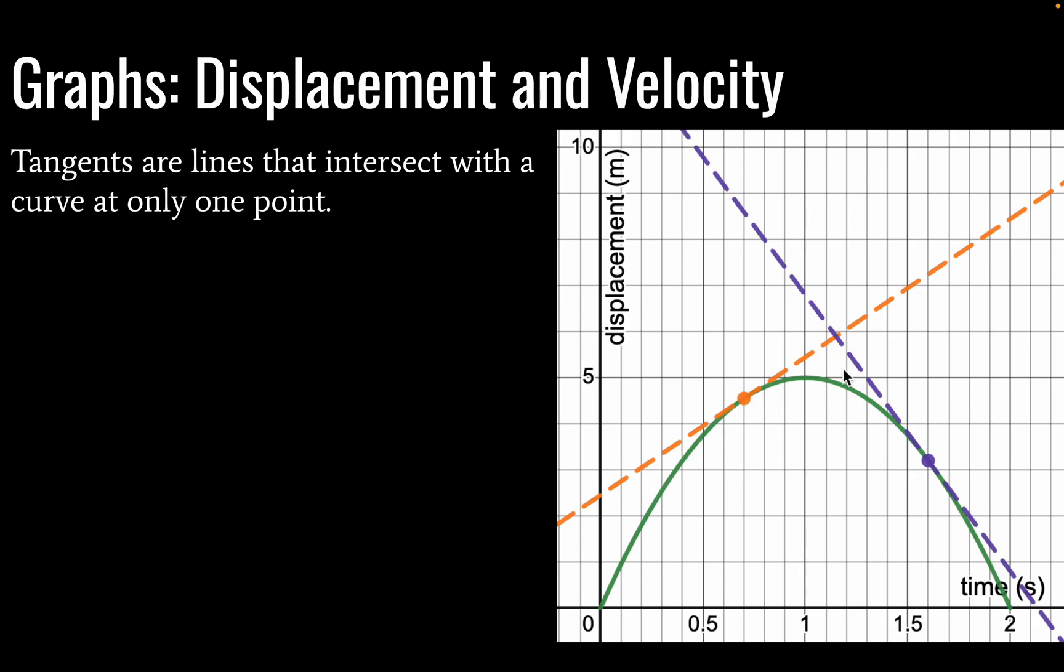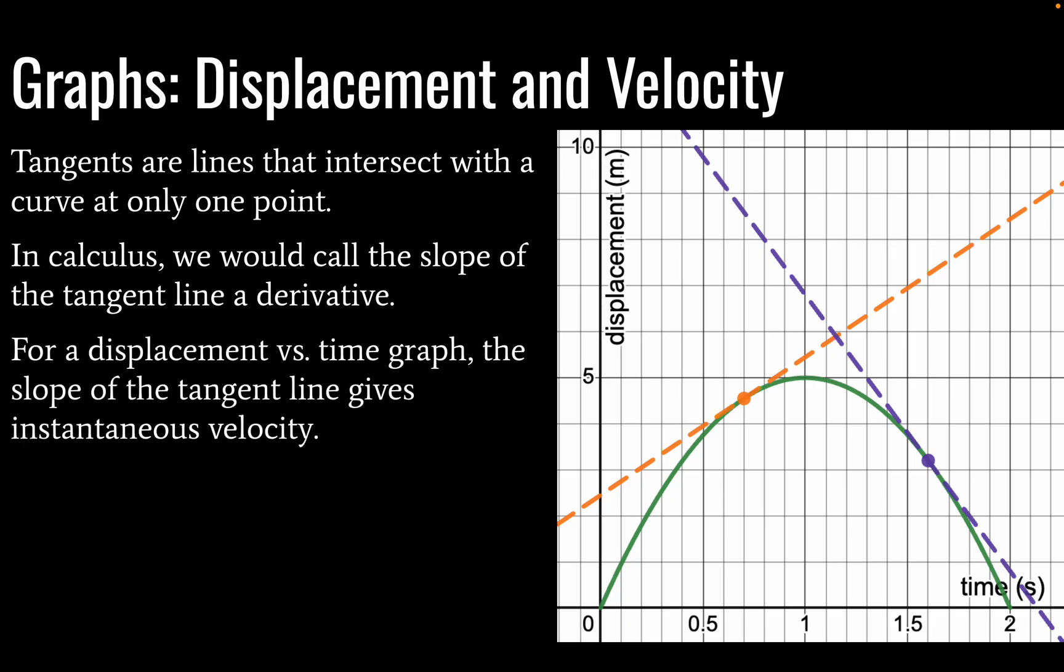Okay, so if I drew this line slightly differently, we could have it intersecting with two points. And it would no longer be a tangent. Okay, so in calculus, once again, we would call the slope of the tangent line a derivative. Note that IB physics doesn't usually require the use of calculus. So, I'm just putting these terms in there so that you recognize what they are later on if you decide to study calculus. It is pretty useful for physics, but not a requirement for IB physics.